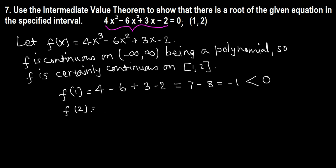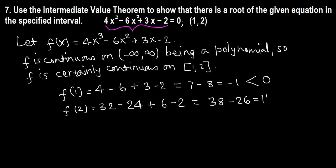Now f(2) — just plug in 2: 4 times 2³ is 4 times 8 = 32, minus 6 times 2² is 6 times 4 = 24, plus 3 times 2 = 6, minus 2. So 32 minus 24 plus 6 minus 2 = 12, which is bigger than 0.